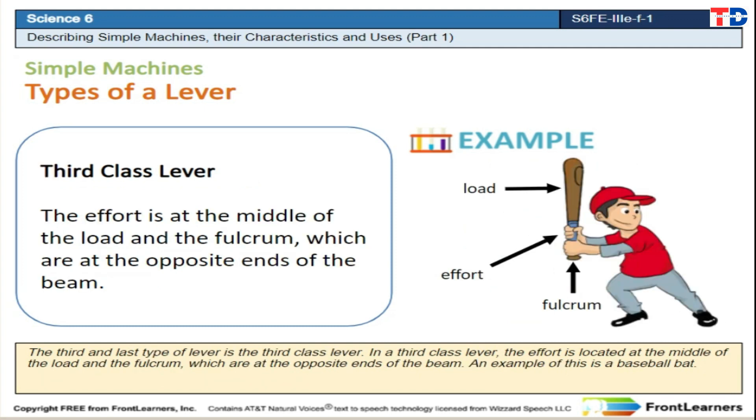The third and last type of lever is the third class lever. In a third class lever, the effort is located at the middle of the load and the fulcrum, which are at the opposite ends of the beam. An example of this is a baseball bat.